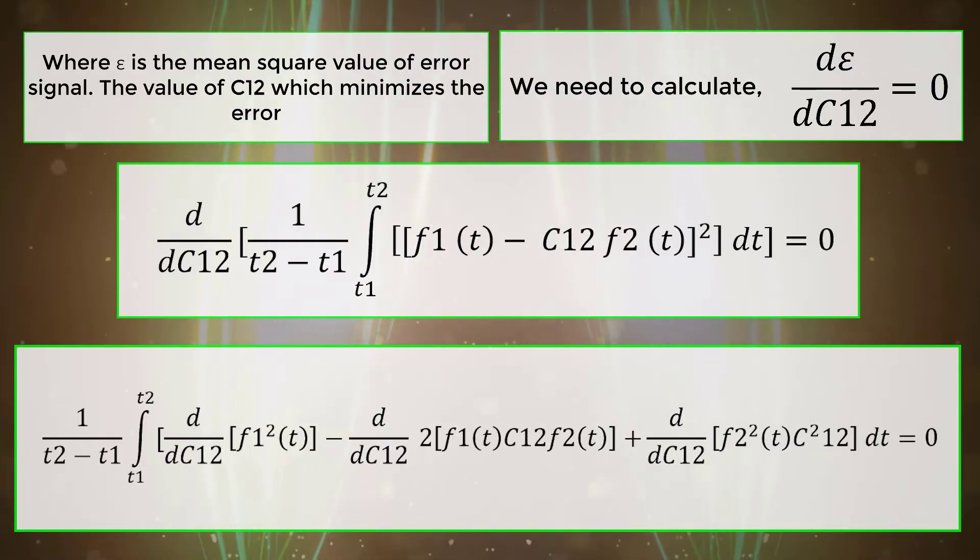d by dC12 of integral [f1^2(t) minus d by dC12 into 2f1(t)C12f2(t) plus d by dC12 of f2^2(t)C12^2] dt equals zero.